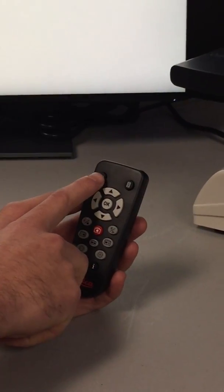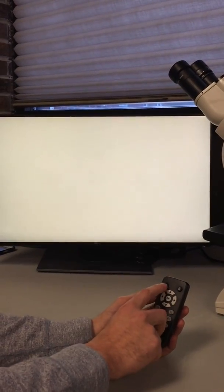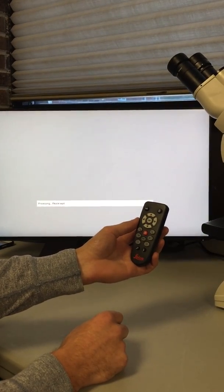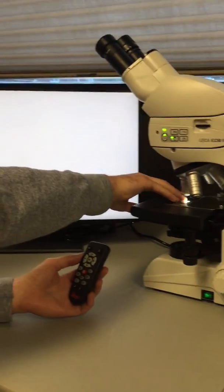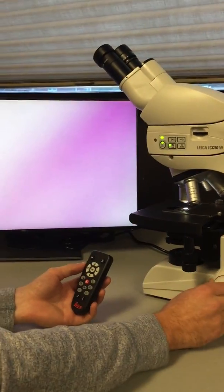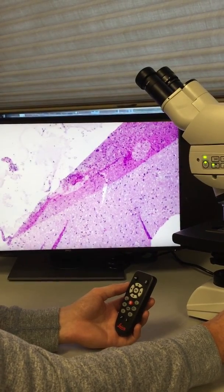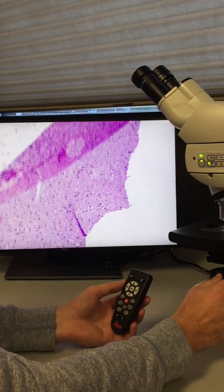This button will give you a white balance on your entire image. First, you'll remove the slide from your sample, and then click the white balance button. After it's completed, you'll put your slide back on the microscope. And you have a nice, white balance, clear image.